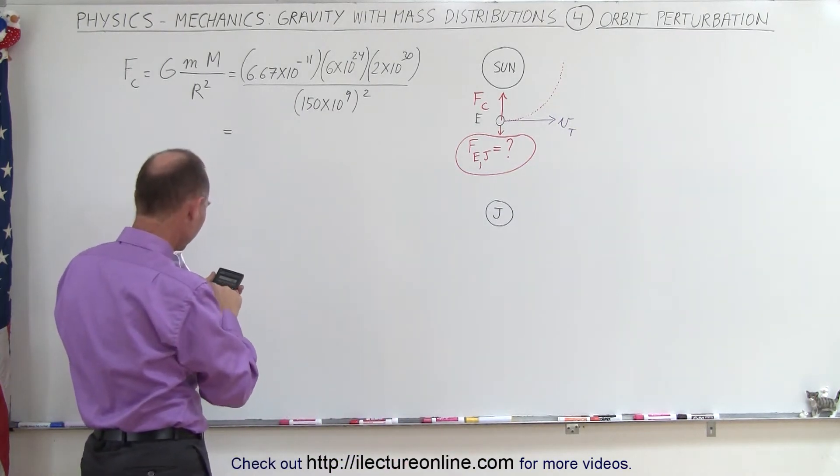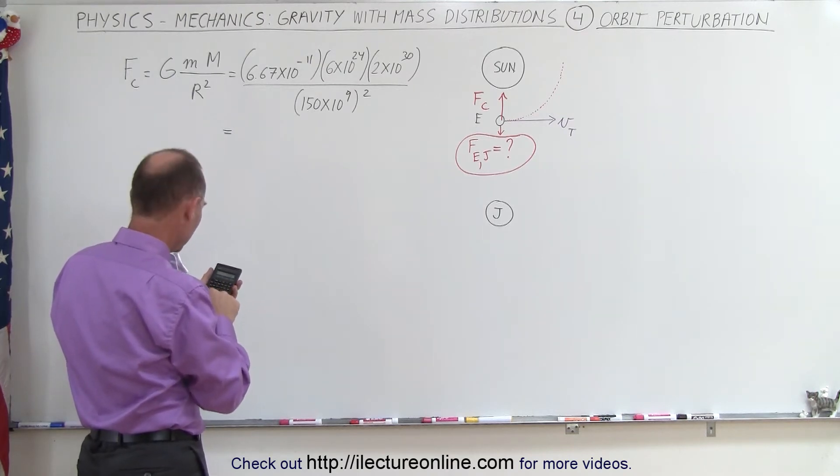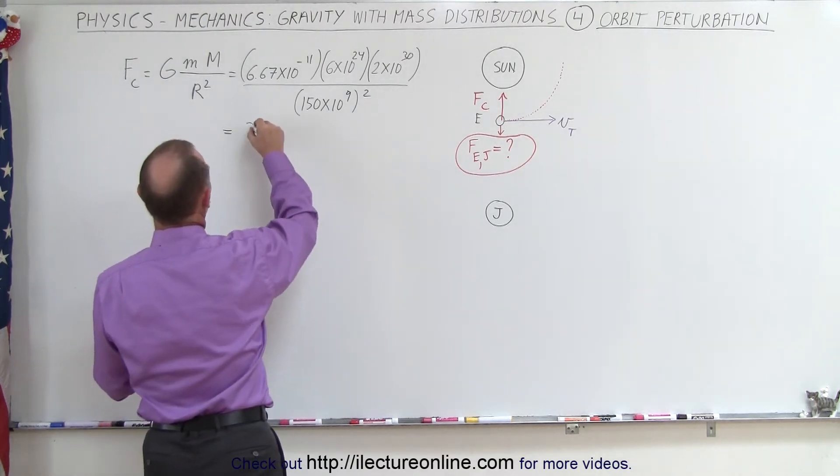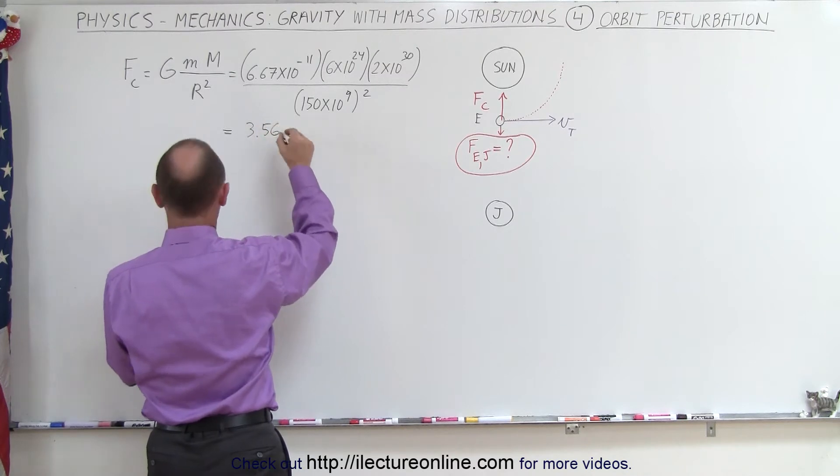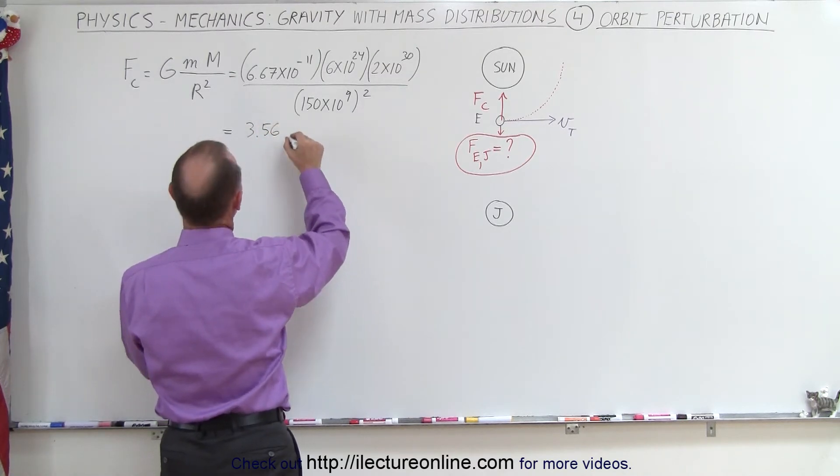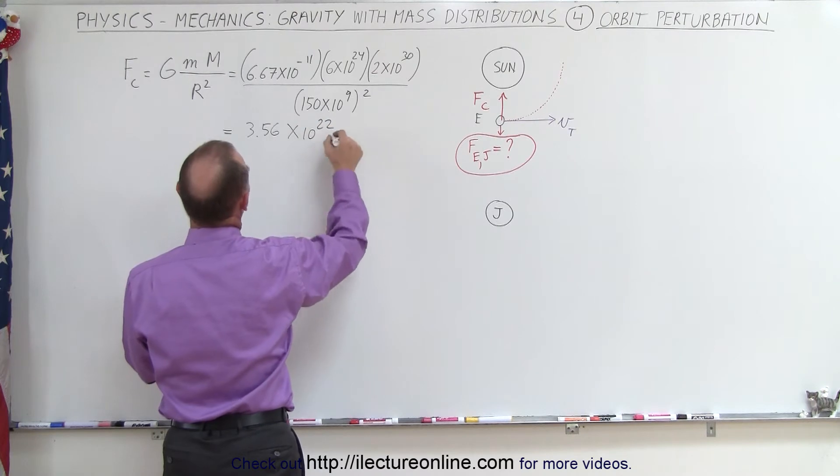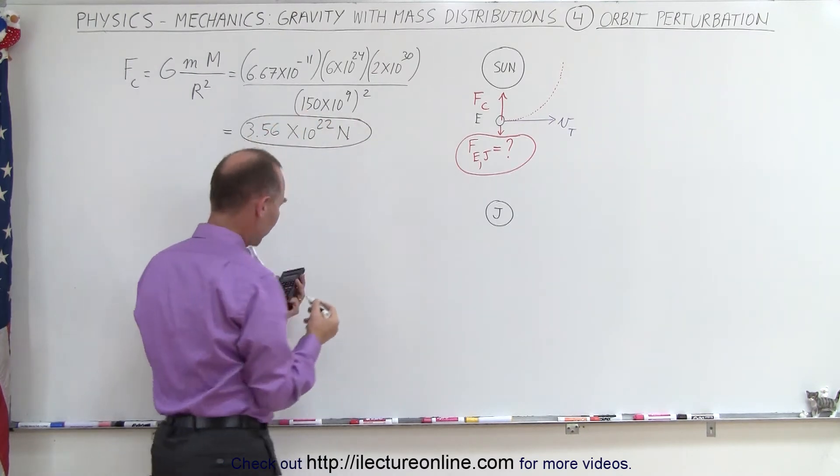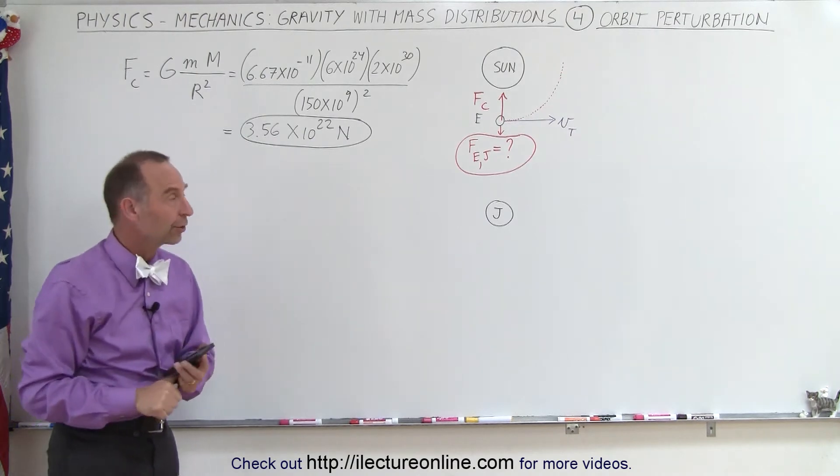So this is going to be 6.67 e to the 11 minus, times 6 e to the 24th, times 2 e to the 30th, divided by 150 billion, squared equals, and that gives us 3.56, 3.56 times 10 to the 22nd power. And the units, of course, Newton's because we're dealing with a force here. So that's the force of attraction between the Earth and the Sun.